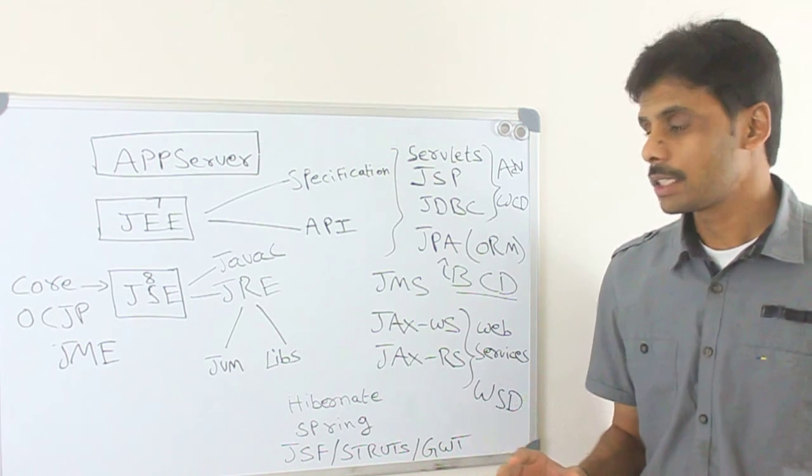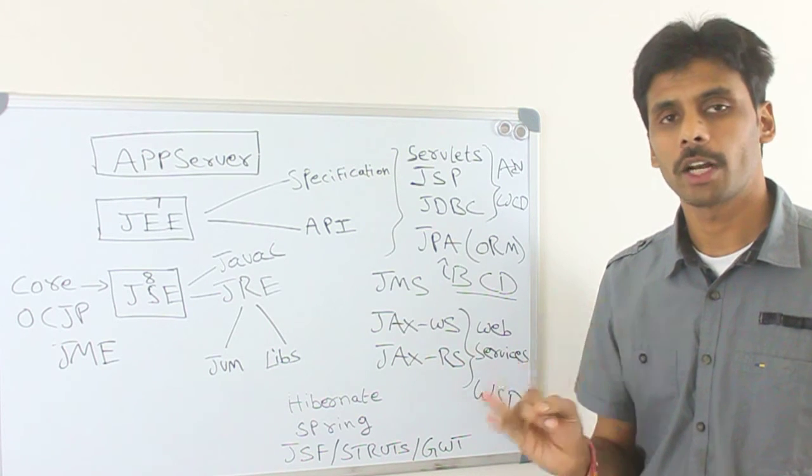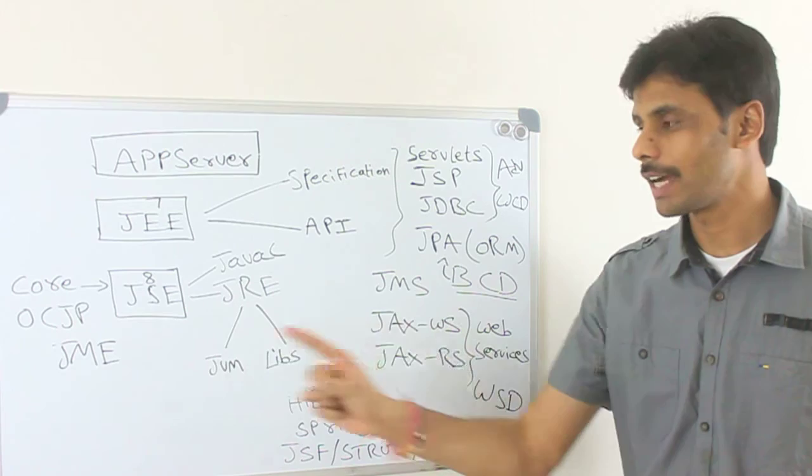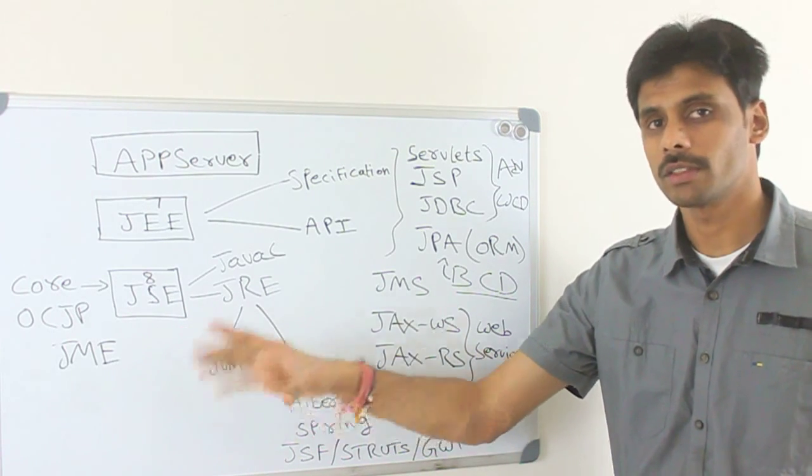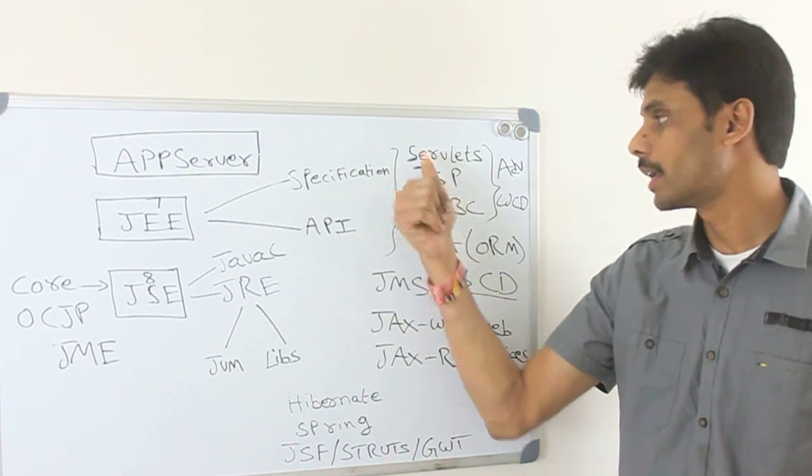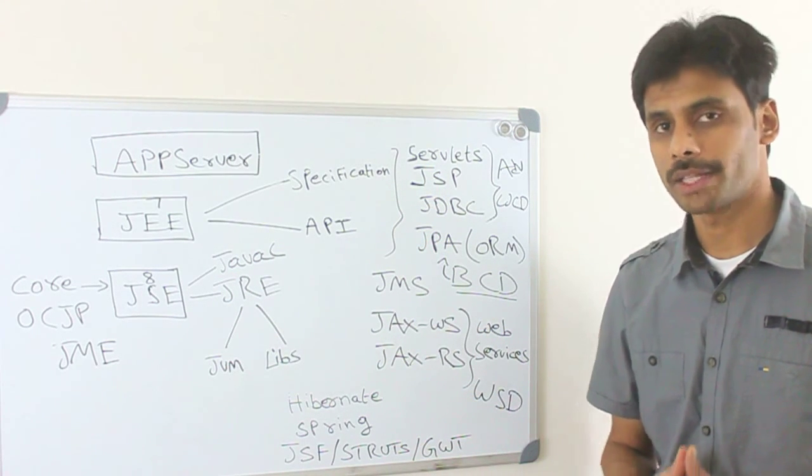So to summarize, there are three different versions of Java. Java Standard Edition, Java Enterprise Edition and Mobile Edition. Typically, as a solid Java programmer, you will start learning Java Standard Edition, the core language. Then you will move on to the Java EE. You will learn the server side of it so that you can start building web applications and enterprise applications.